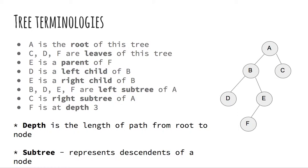E is a parent of F. D is a left child of B. E is a right child of B. B, D, E and F are left subtree of A. C constitutes the right subtree of A.